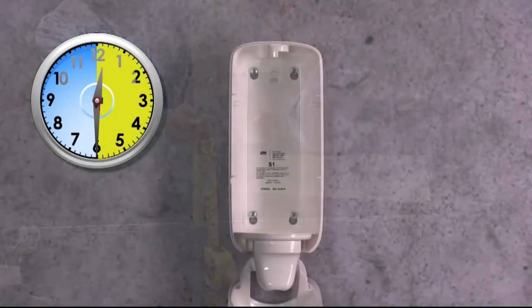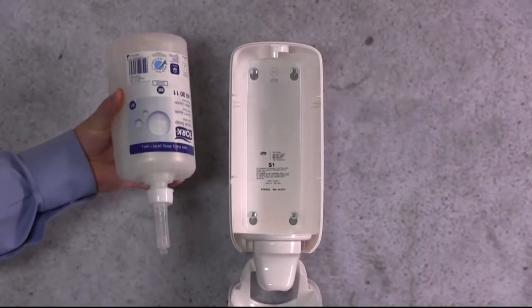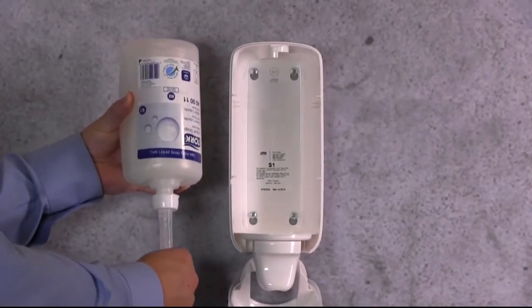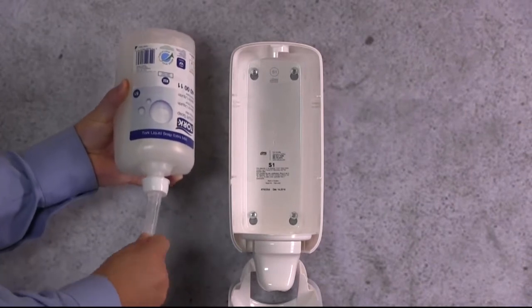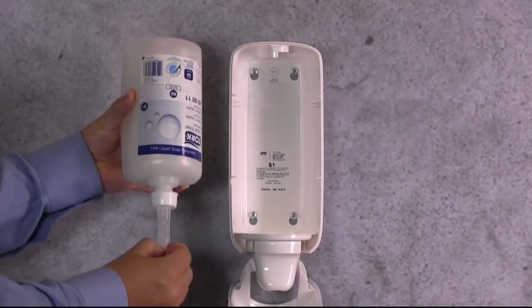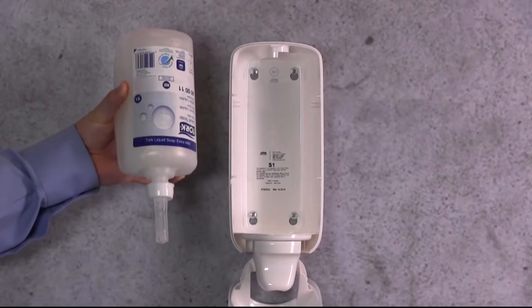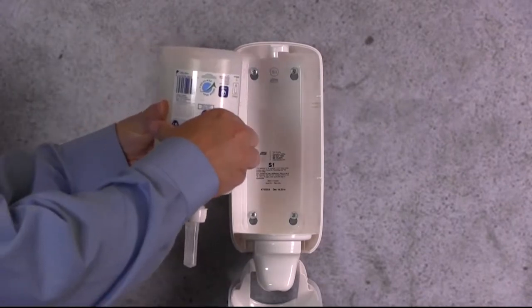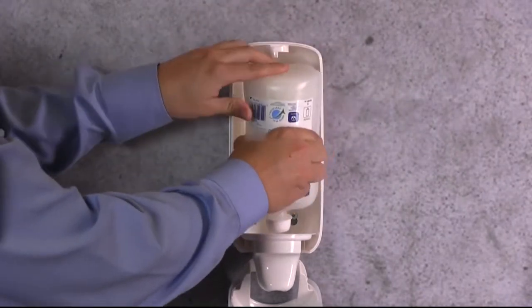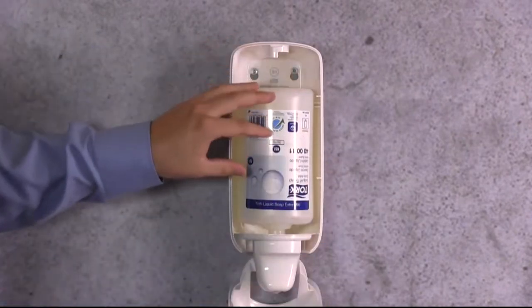To load the Torque liquid soap dispenser, open your dispenser using the Torque key. Take your Torque refill and locate the tab on the top of the nozzle. Twist and remove the tab. Place the bottle in the dispenser as shown and close the front cover.